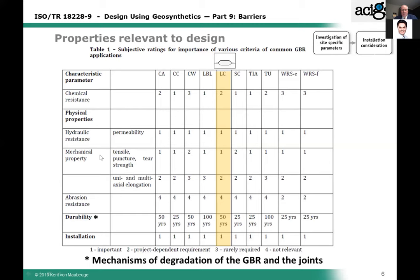These are only examples — it doesn't mean that if you go into a landfill cap where it's marked, you need to know these properties. If not, I would consider a GCL as my capping lining system. It doesn't mean that you need tear strength, because tear strength is typically something you need for a geomembrane. So the designer does have to look into these mechanical properties and take a closer look at what is relevant for the specific product being selected.